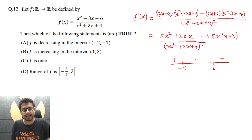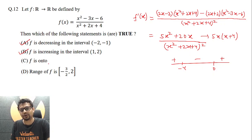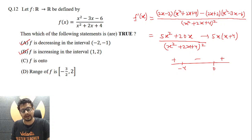So f is decreasing in the interval (minus 2, minus 1) — that checks out. f is increasing in the interval (1, 2) — that also checks out. f is not onto, which we had already discussed. The range of f is stated as [minus 3/2, 2] — let's verify that.